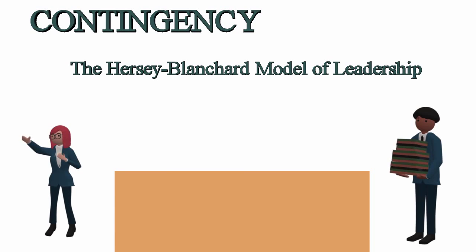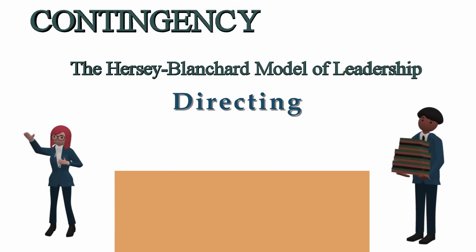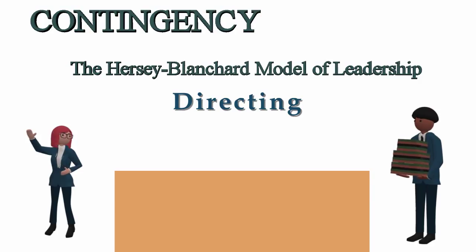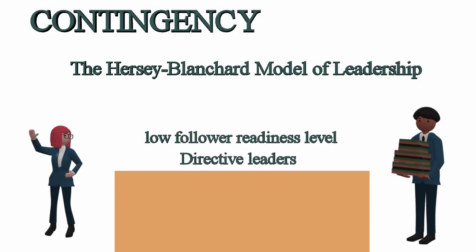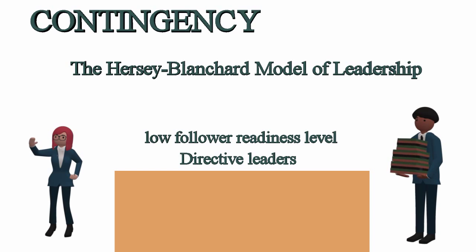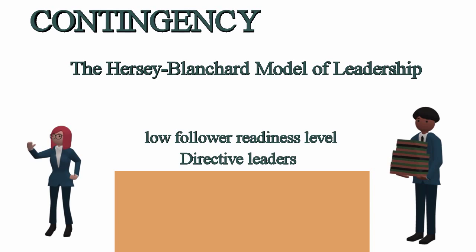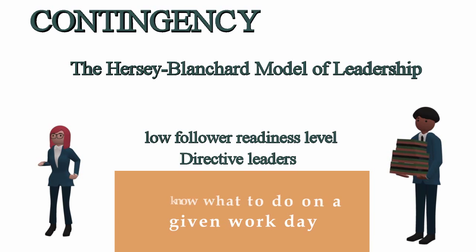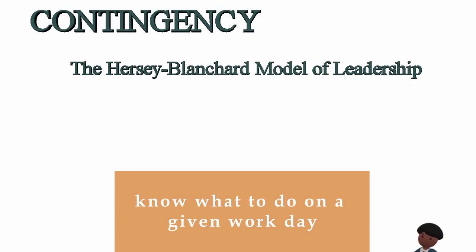In the directing leadership style, the manager provides clear and specific instructions to subordinates. This approach is best suited for subordinates who have a low follower readiness level. Directive leaders provide specific directions to their employees, clarifying role expectations, setting schedules, and making sure that employees know what to do on a given work day.